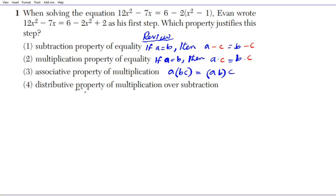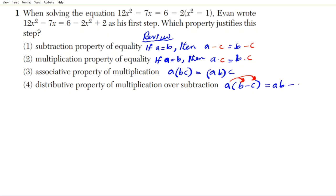The last one is the distributive property of multiplication over subtraction. If you have a factor on the outside and a difference in the parentheses, you can distribute that number across the two values inside the parentheses. The result is A times B minus A times C, written as AB minus AC.